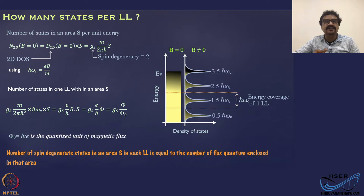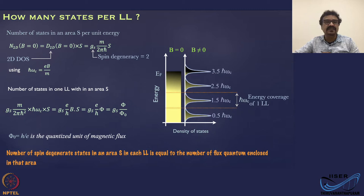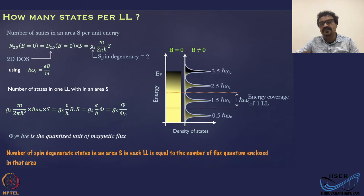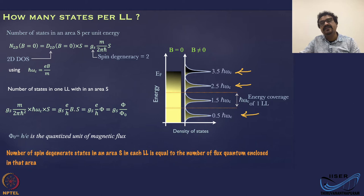The first question one would like to ask is: how many states are there in each Landau level? These Landau levels are defined in k-space, so how many states are possible in a Landau level? The cartoon here shows the distribution of states in the absence of any field, and the formation of the Landau levels, which are represented by these orange-shaped functions.